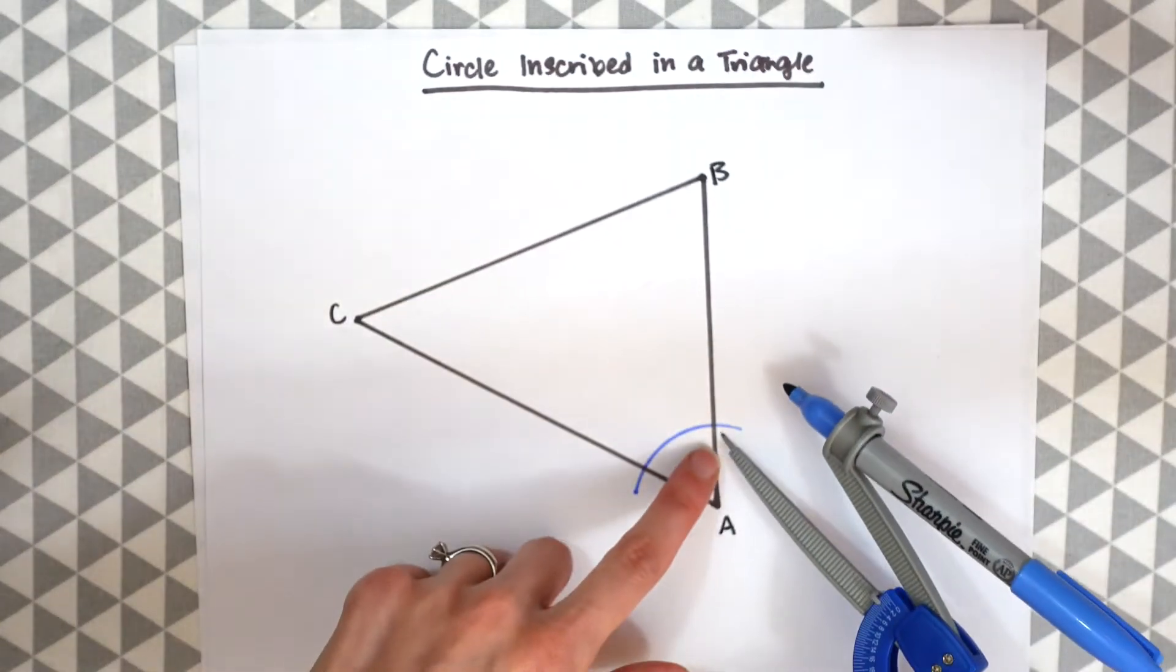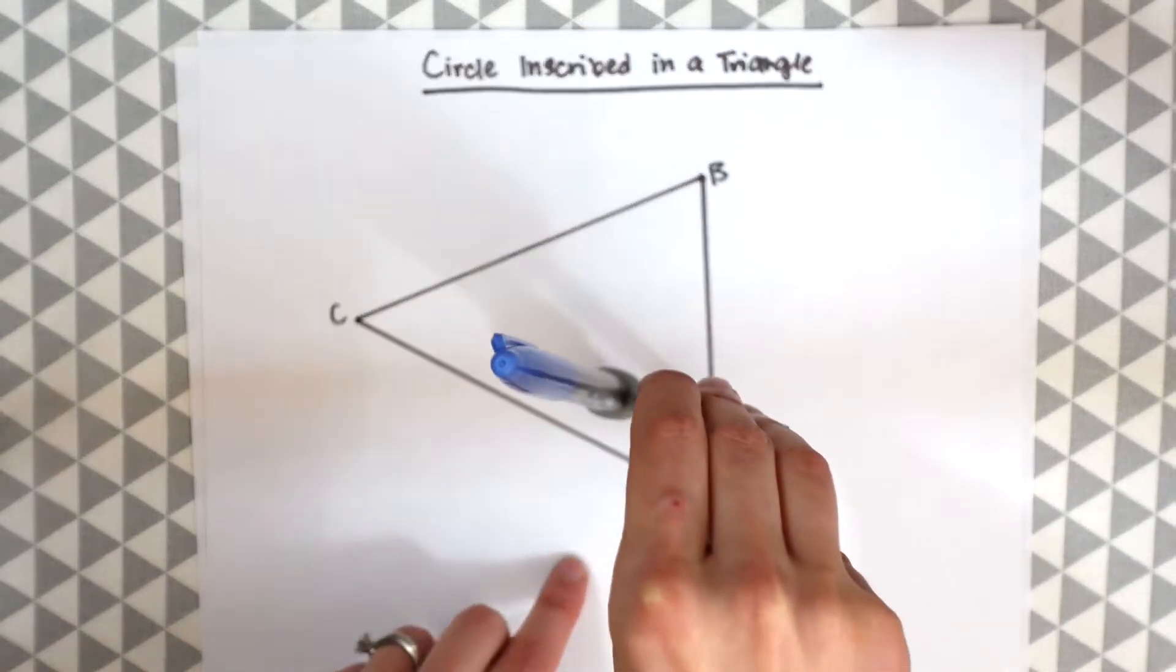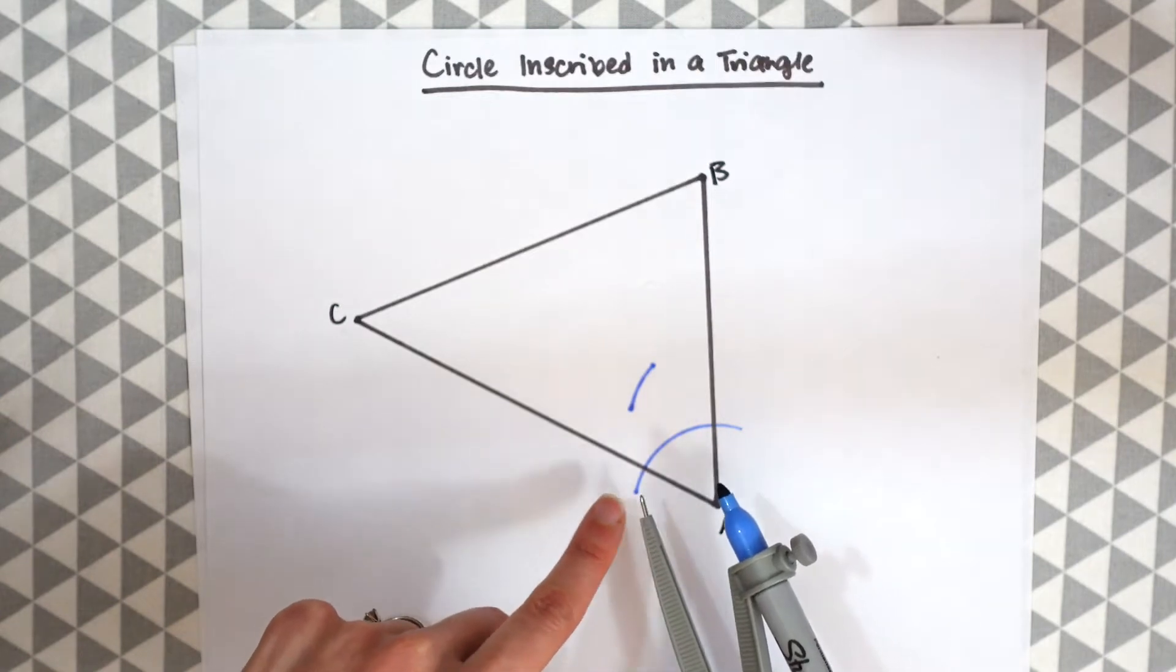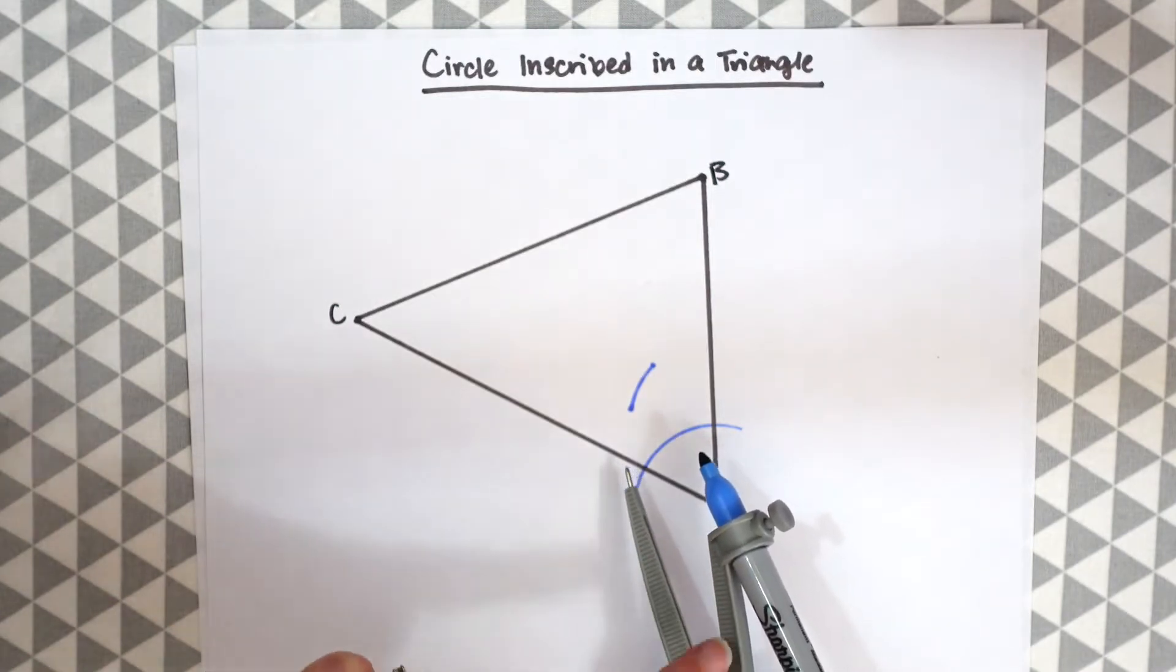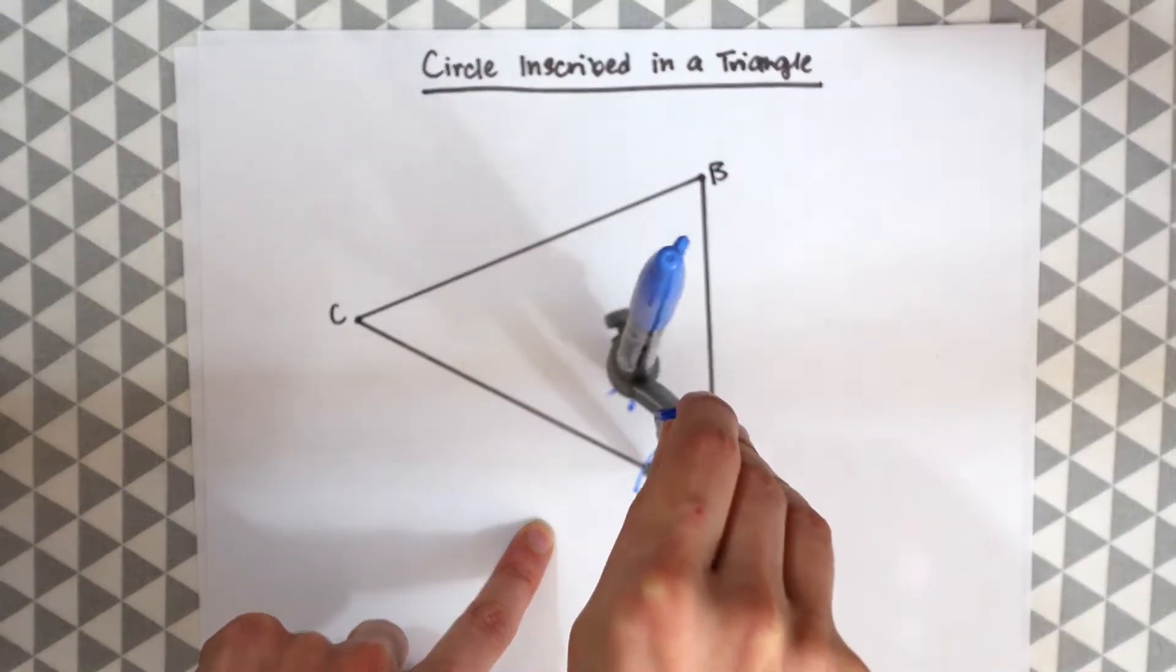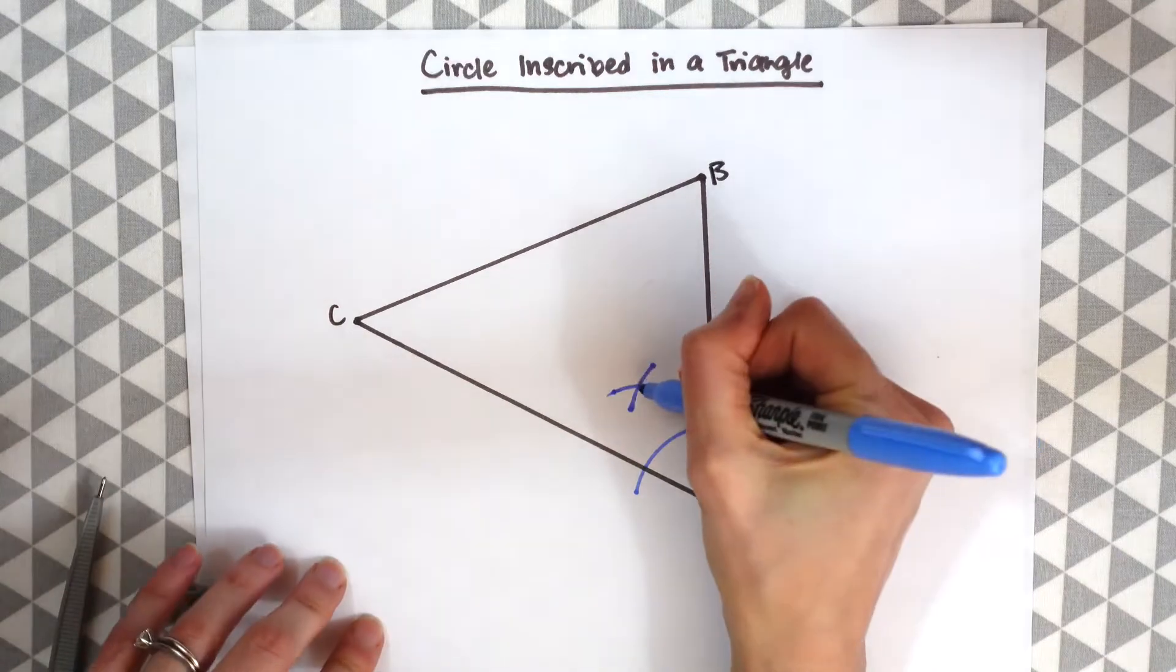We're going to take the tip to this side where they intersect with the triangle and make a little arc, another arc. Then we'll bring the tip of the compass, keeping the same compass size, to the other side and do the same thing. Notice we just made this little point of intersection.